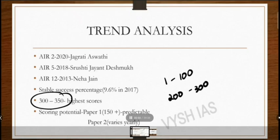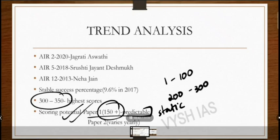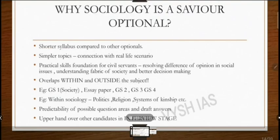In UPSC, the optional is the first and foremost thing to focus upon. If you are getting 300 plus in optional, your name will certainly be in the rank list — I can guarantee that. Sociology has a high scoring potential. In optional, we have two papers: the sixth and seventh paper. Paper one is pretty static, and in paper two it's kind of dynamic — it varies yearly. If you are a smart aspirant, you can get good scores in paper two also.